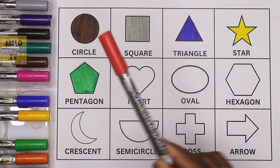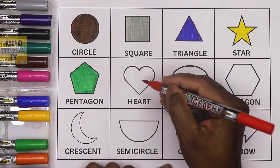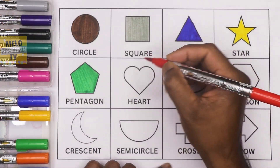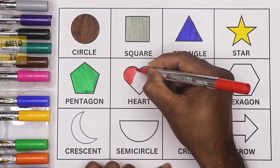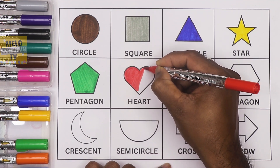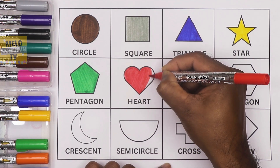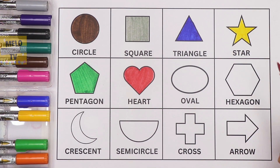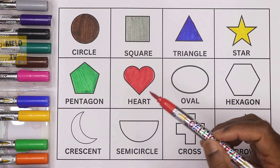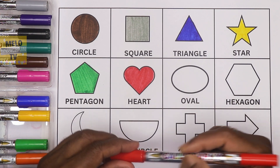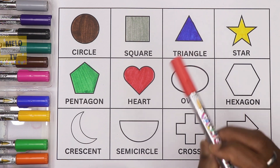Next I'll take red color to color this shape. This is a heart. Okay, so now it is a red heart, where heart is the shape and the color is red.